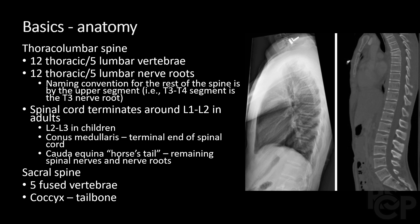It is also important to know where the spinal cord terminates. For adults it's around L1, and for children L2 to L3. The terminal bulbous part of the spinal cord is termed the conus medullaris, and the remaining nerve endings and nerve roots coming off the cord resemble a horse's tail, hence the term cauda equina.